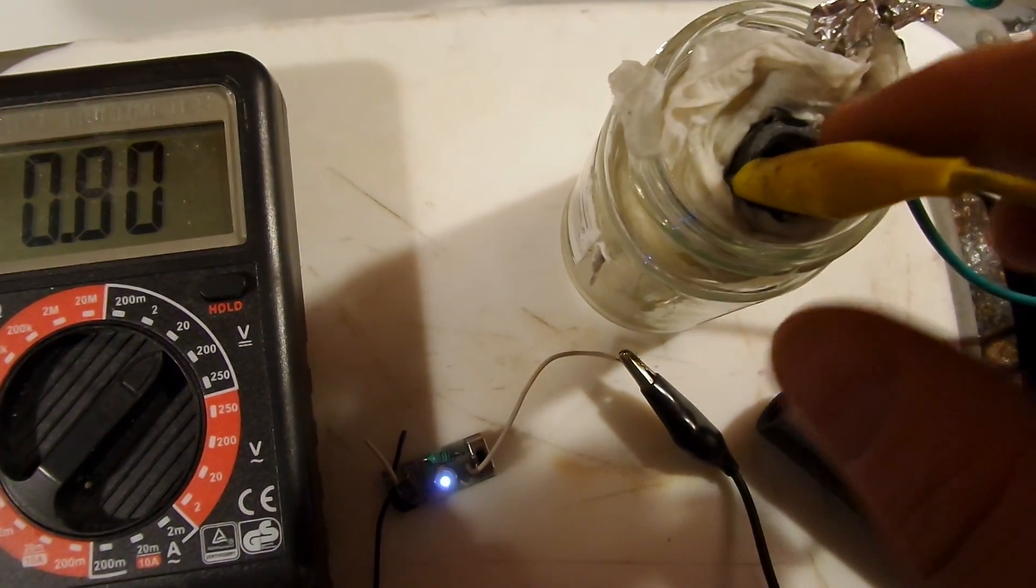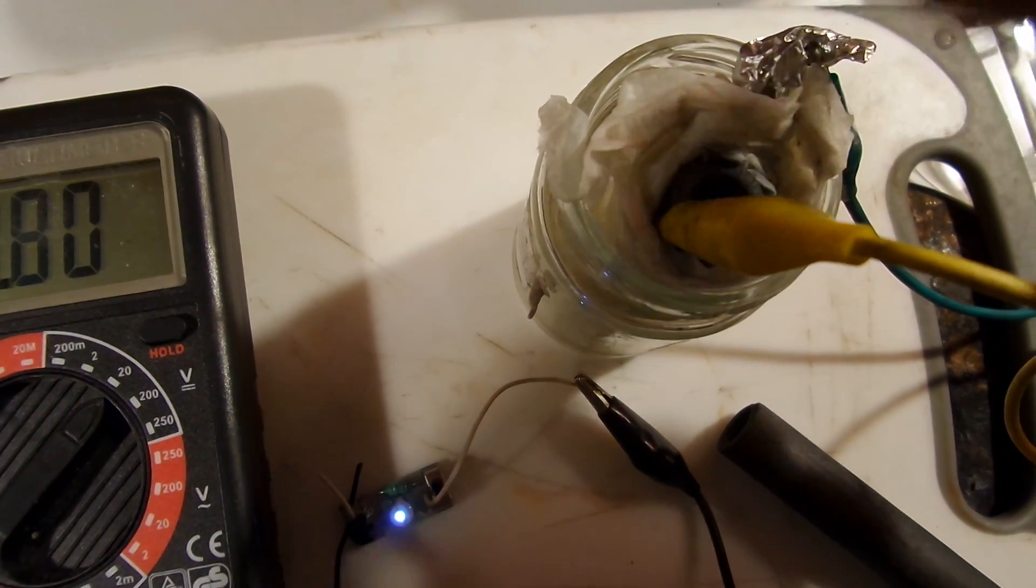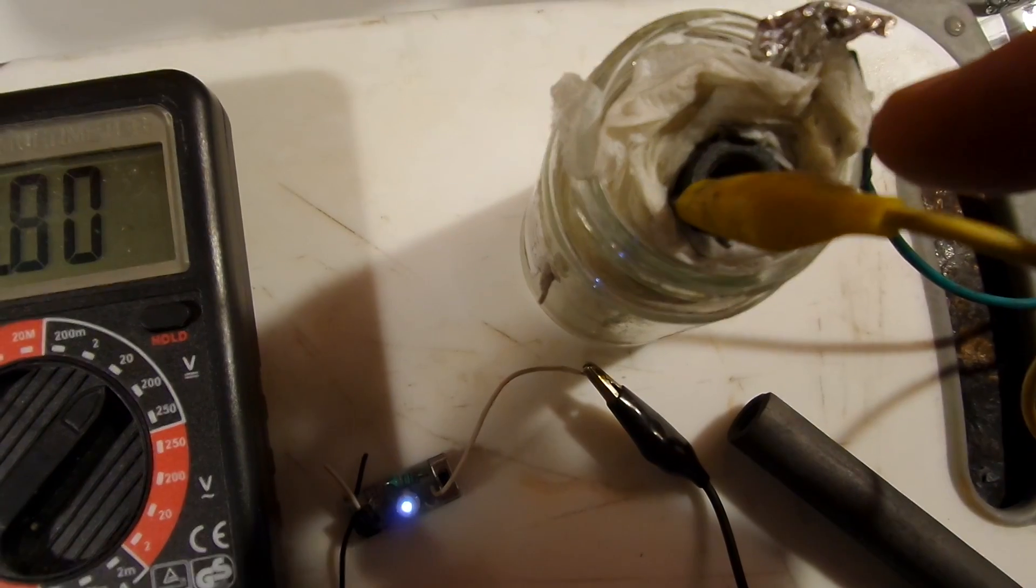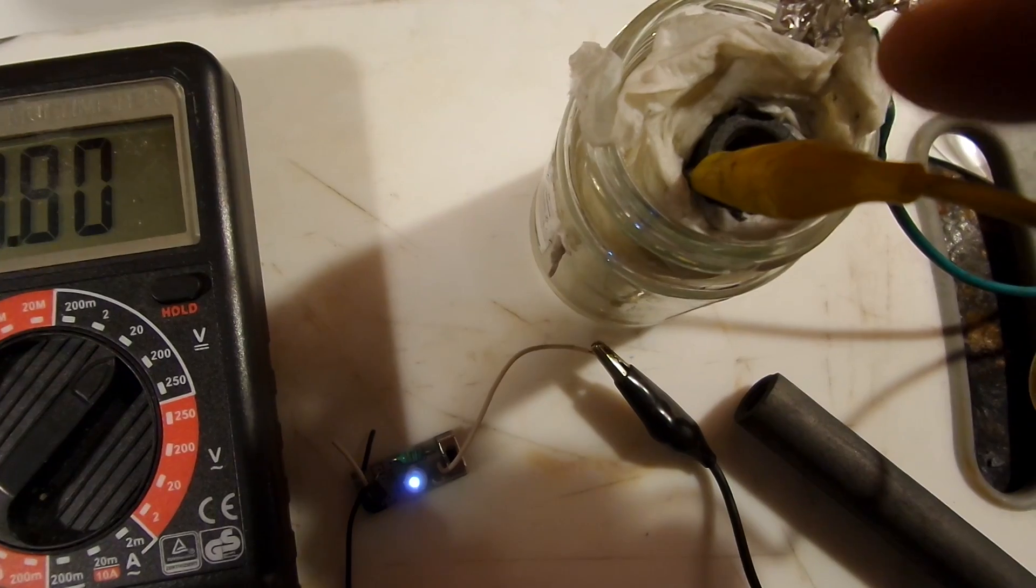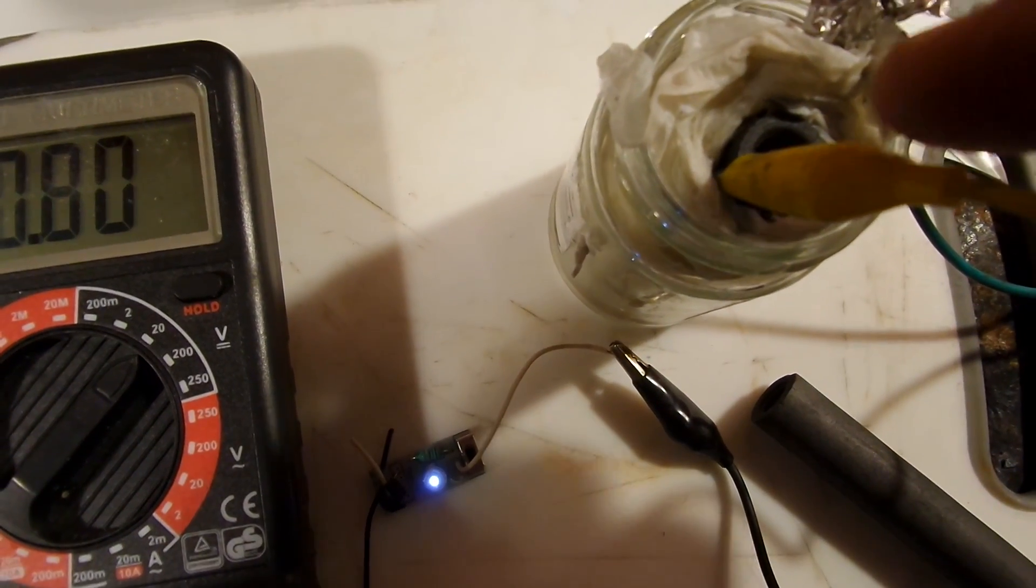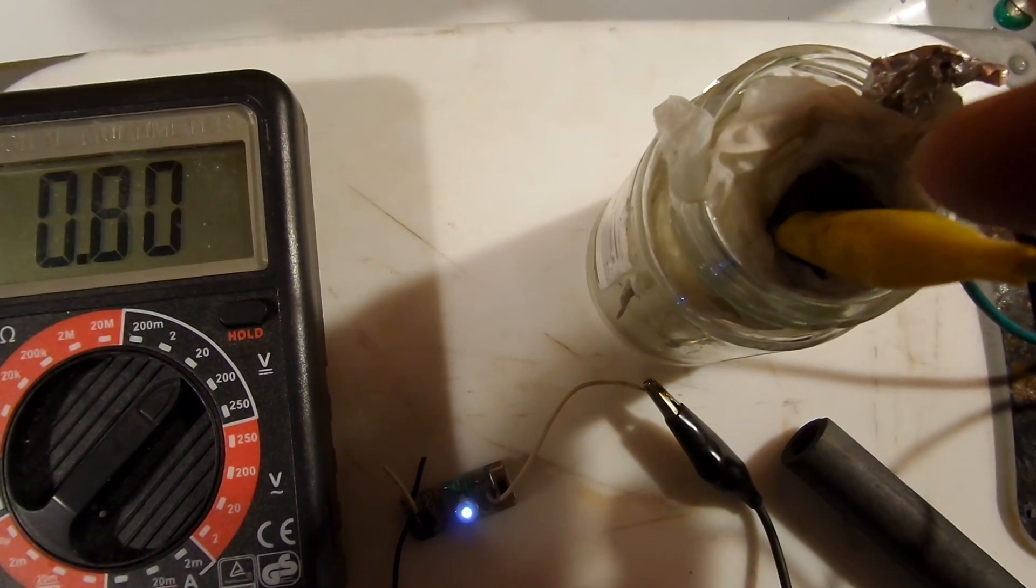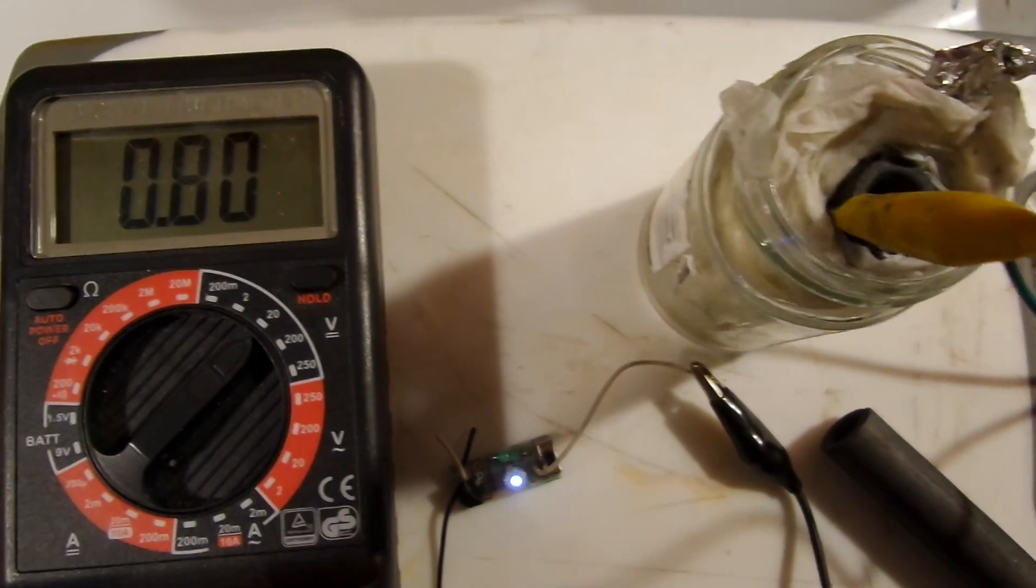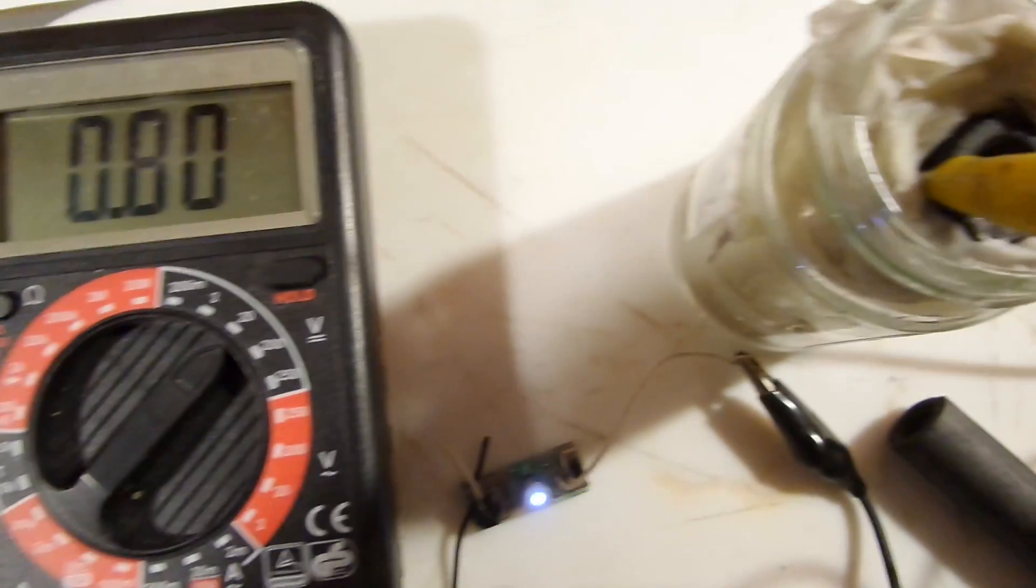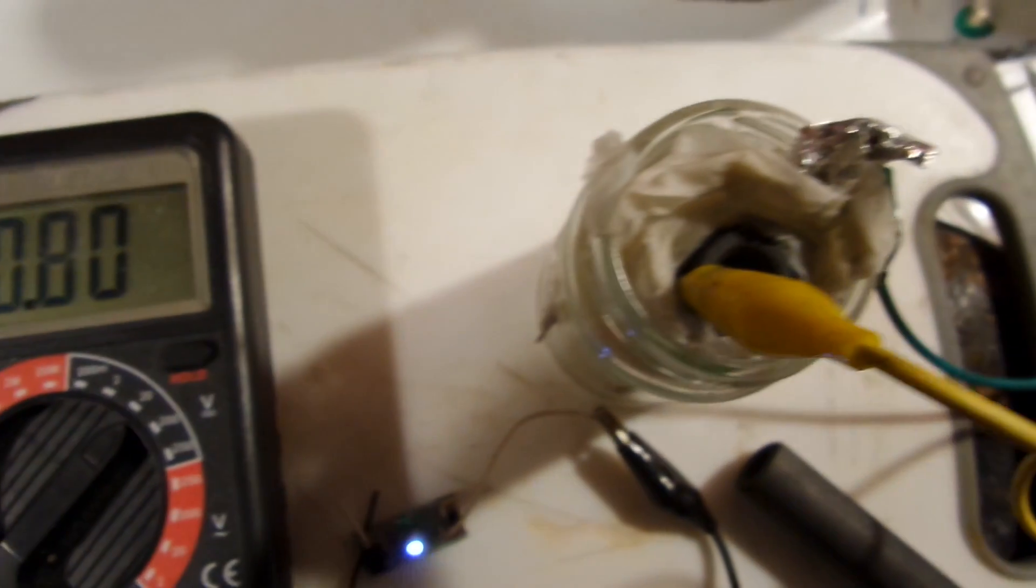You can get more current out if you wind around this graphite rod some stainless steel mesh metal, some stainless steel screen mesh. You put that around it and it works as a better current collector. Then you get more power out of the cell. I haven't done this yet here.